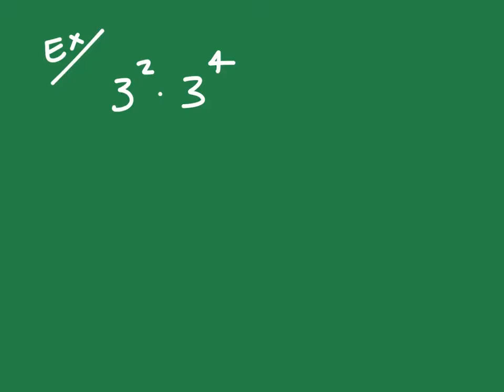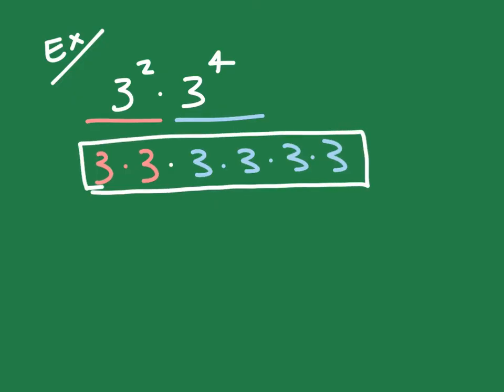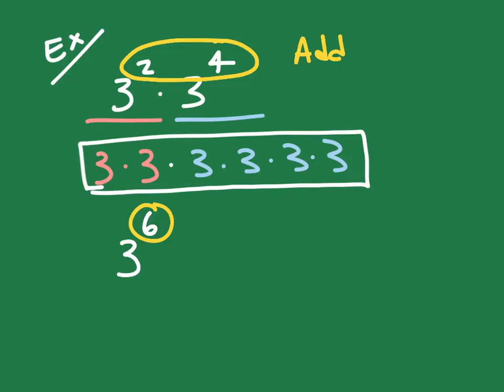If I write out 3 squared, that means that I'm taking 3 times 3. If I'm doing 3 to the fourth power, that means that I'm doing 3 times 3 times 3 times 3, and we're multiplying all that. What we have to do is now take this new concept here and rewrite this using exponents. That would then be 3 to the sixth power. So the question is, how do you take 2 and 4, what operation do you do to get 6? And the answer is that you would add them. So we would write this as 3 to the 2 plus 4 power, which would just give us 3 to the sixth.